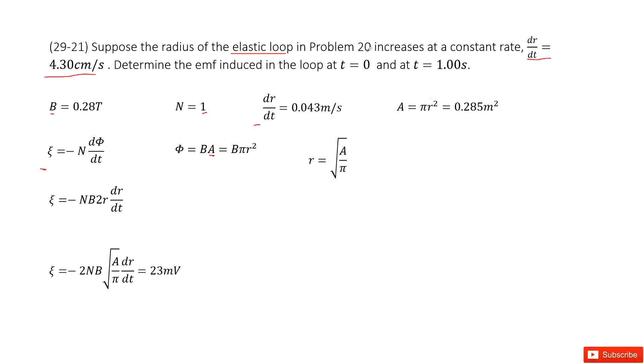So in problem 20, we know the cross-sectional area for this loop. A is given as 0.285 m squared. So from this equation, you can get the R at the very initial. So this R is at initial time.